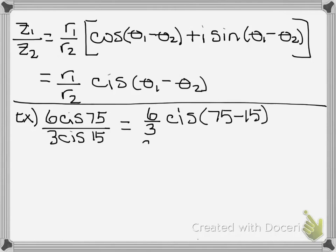We are going to take r1 divided by r2, cis of theta1 minus theta2. 6 divided by 3, 2. Cis 75 minus 15, that's going to take us to 60 degrees. We're not done.